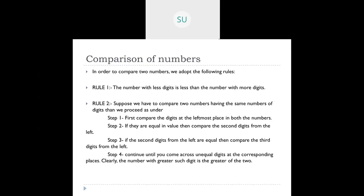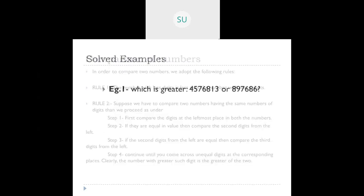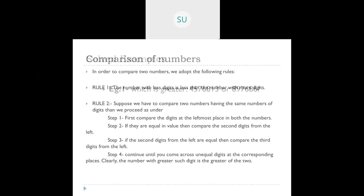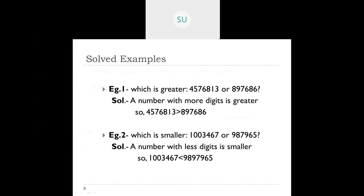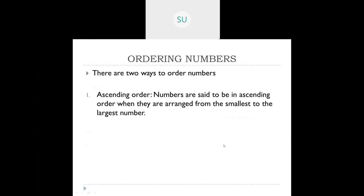The number with a greater digit at the differing place will be the greater of the two numbers. For example, the first number had a greater number of digits so it is greater. In another example, the second number is smaller because it has fewer digits.